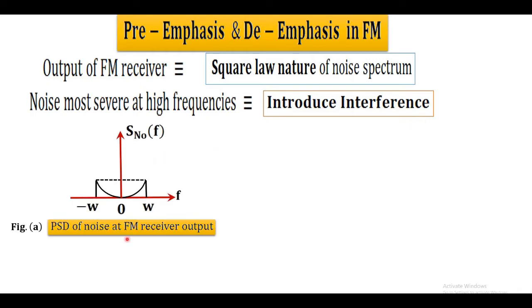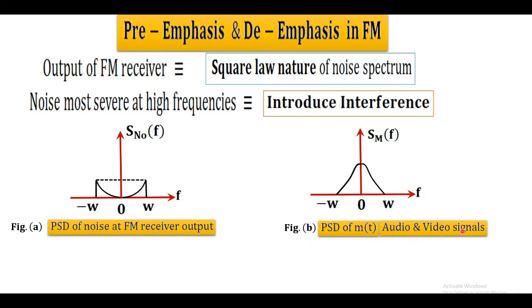To understand this, we consider power spectral density of noise at FM receiver output as shown in figure A and given by S_N₀(f). Also, power spectral density of message signal such as audio and video is shown in figure B and denoted by S_M(f). Both power spectral densities are band limited to ±W. In power spectral density of noise, we see zero value at f=0 and increases up to ±W. But in power spectral density of message signal, there is a maximum value at f=0 and decreases accordingly and becomes zero at ±W.